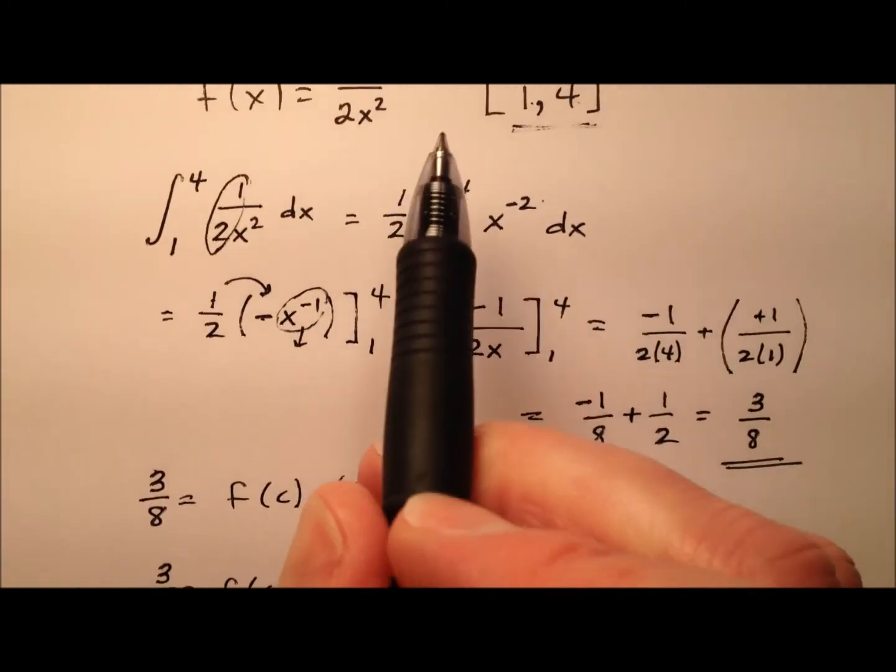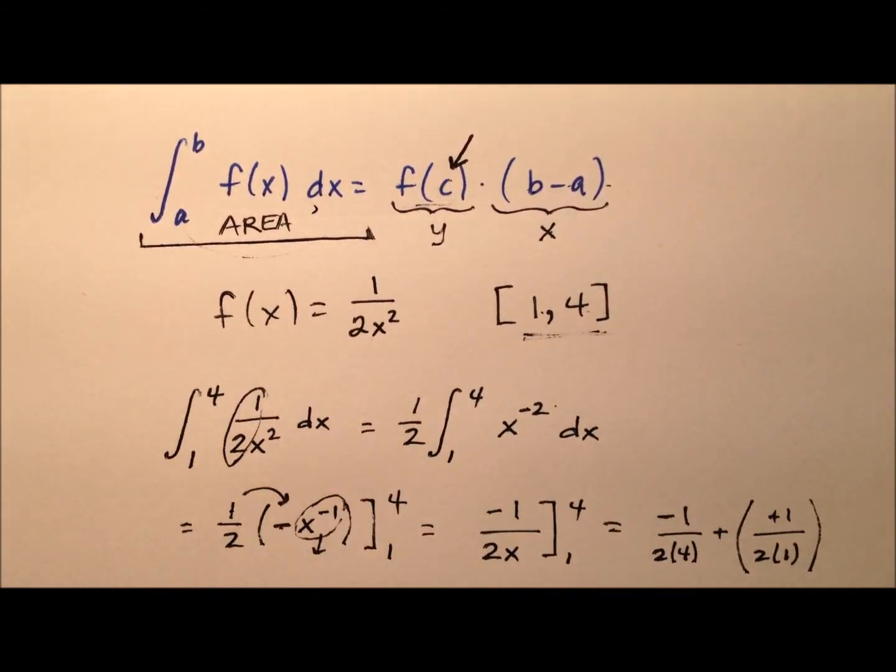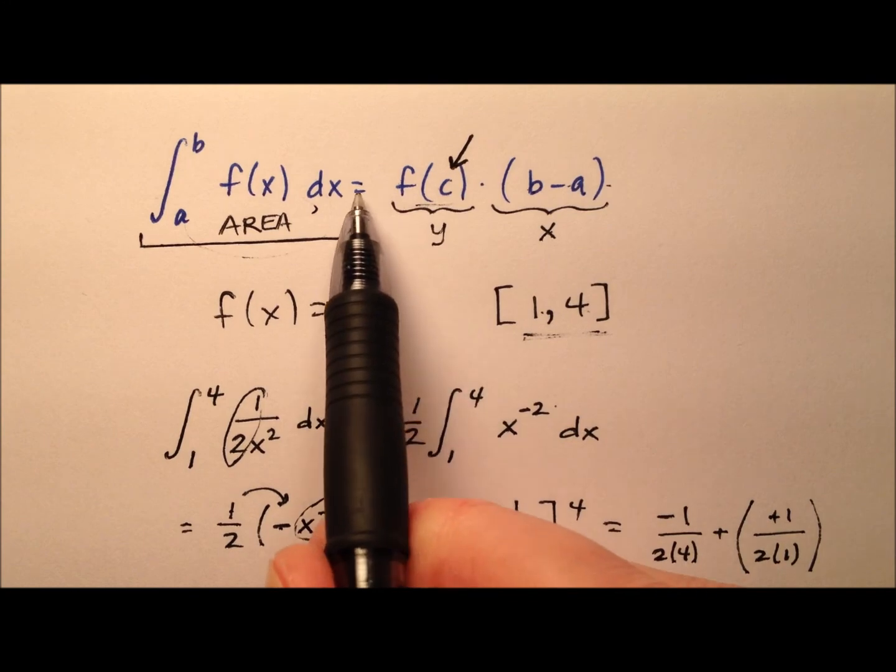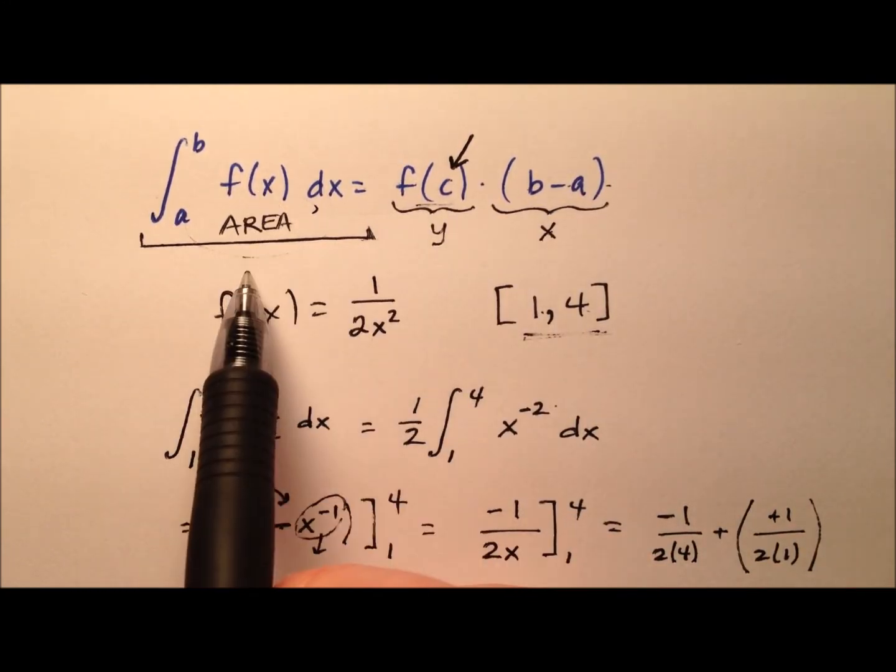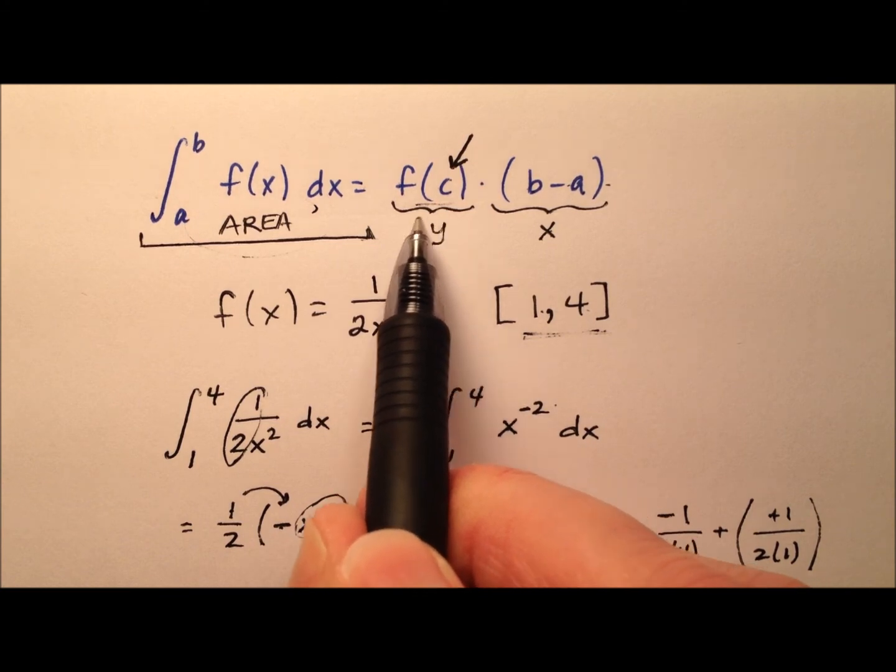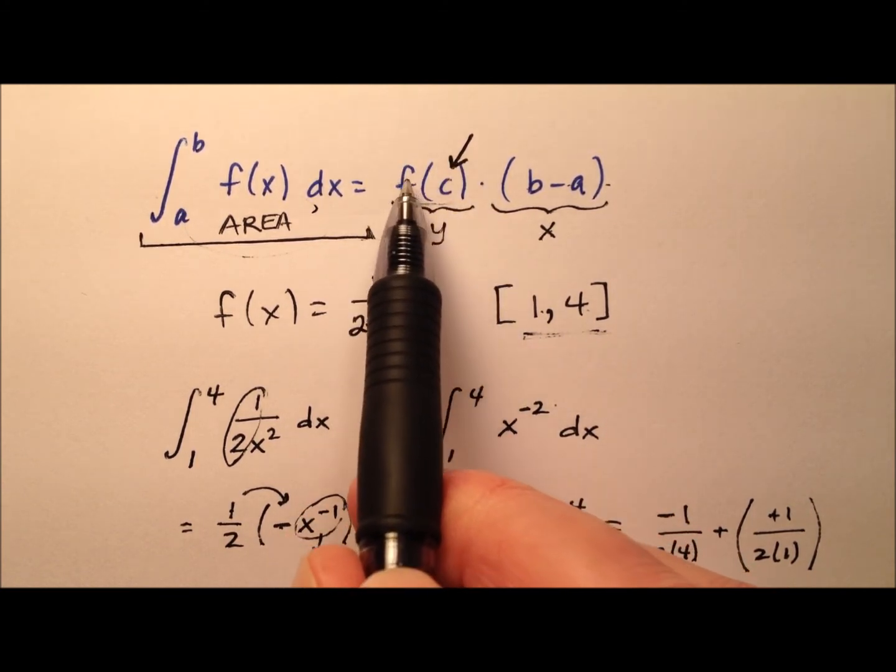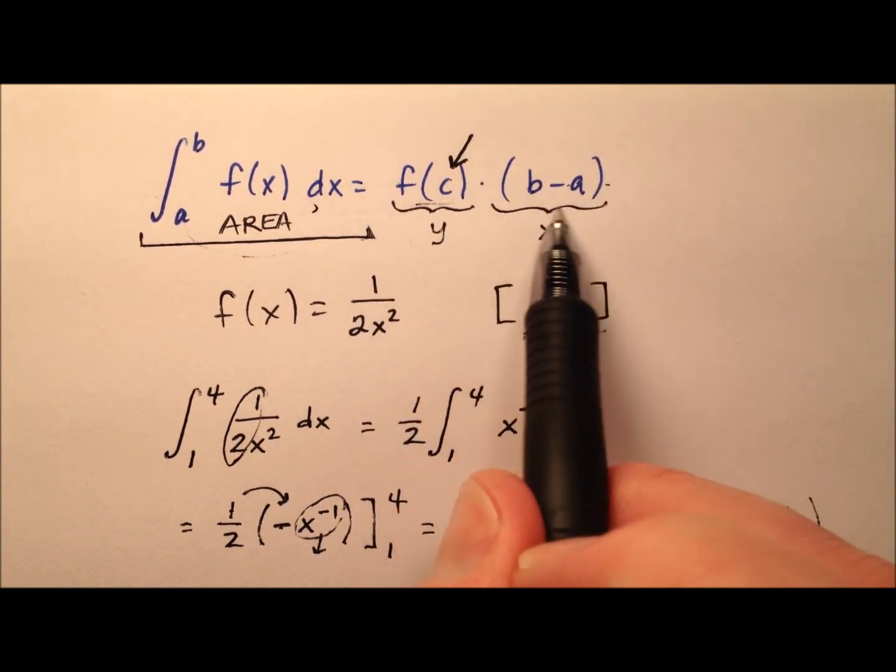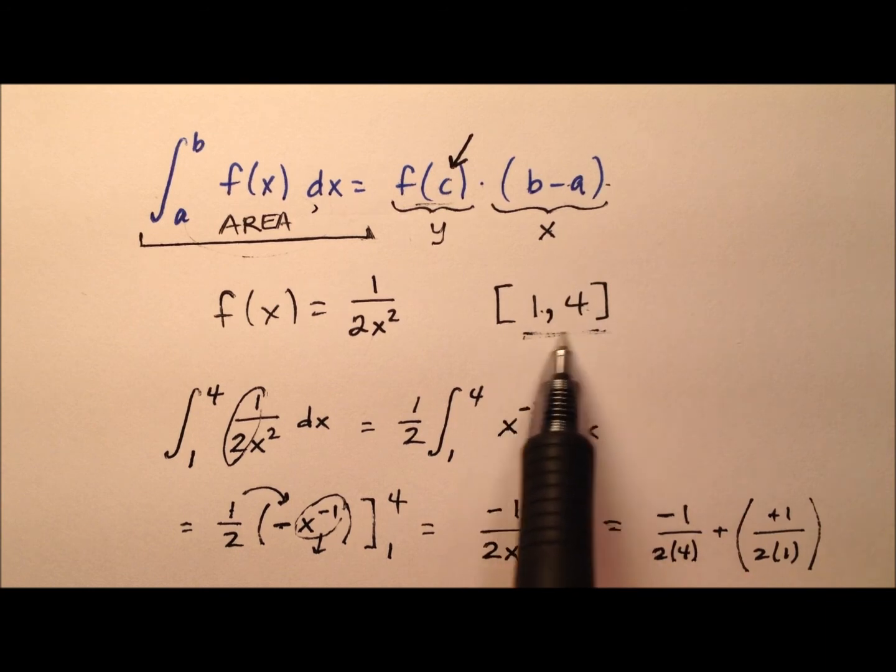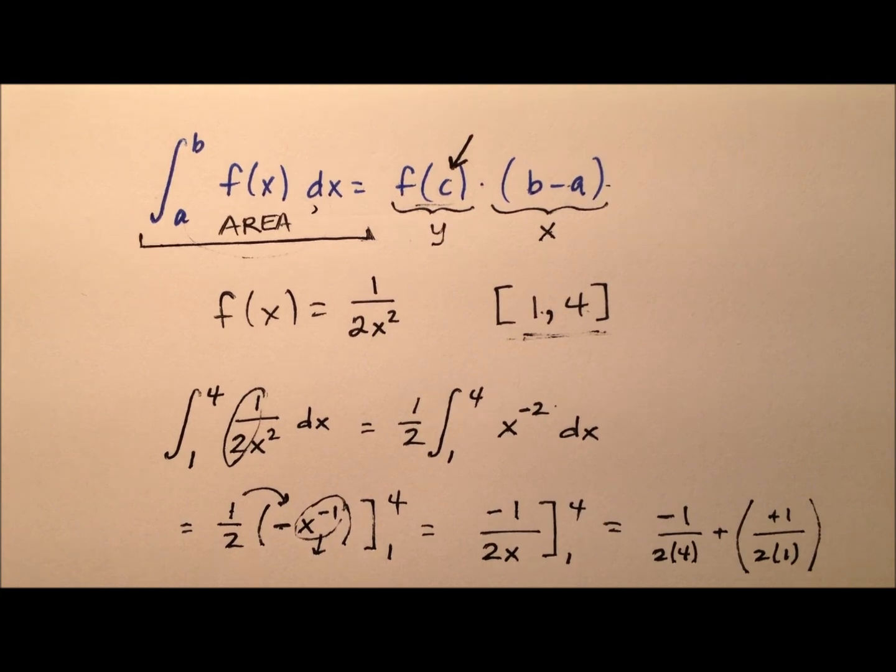So going back up here, what this all means is we have this area and that area was three eighths. And that's equivalent to some rectangle. If we take this area and kind of smoosh them down into a rectangle, we have the height of the rectangle, which is the average value of the function, f at this c value, which was two, and multiply that by the width of the rectangle, which was the width of this region. So let's go ahead and take a look at what that looks like graphically and we're ready to wrap this up.